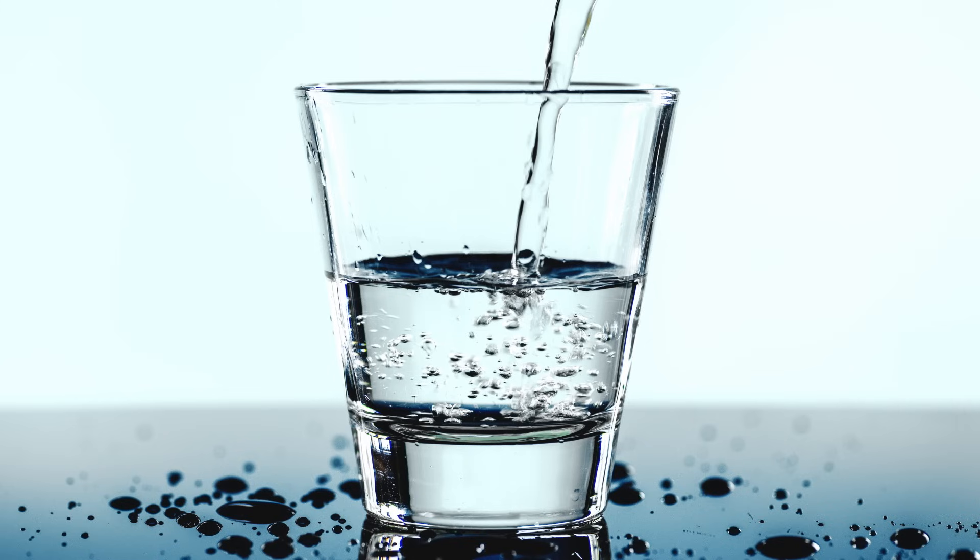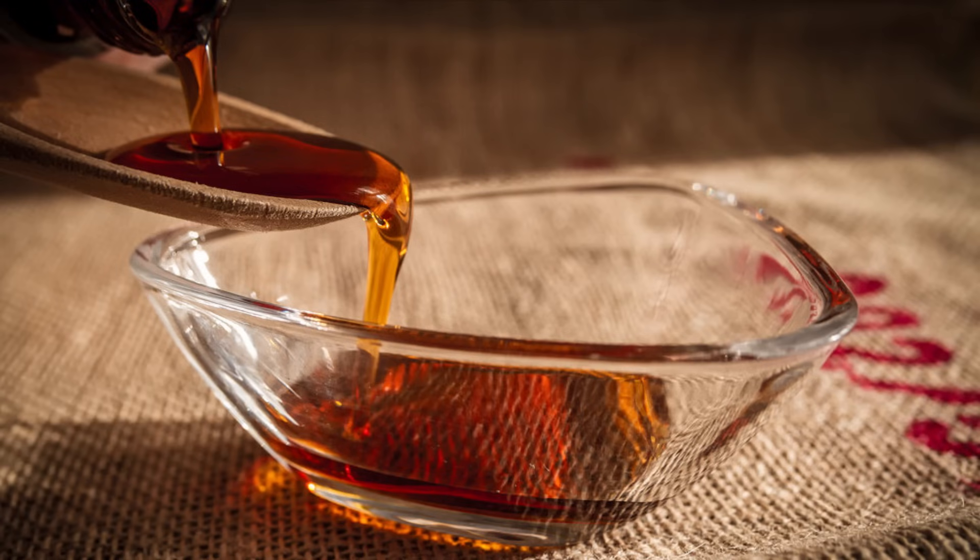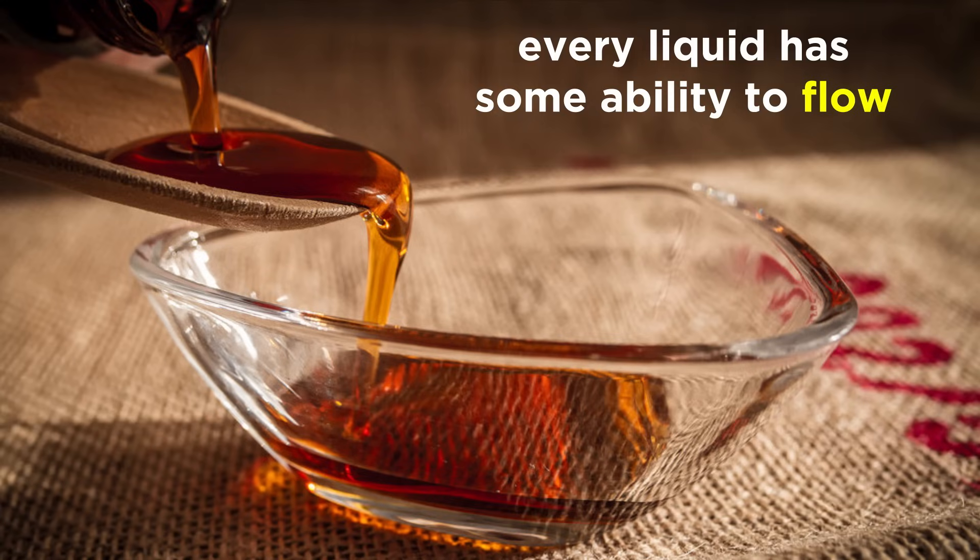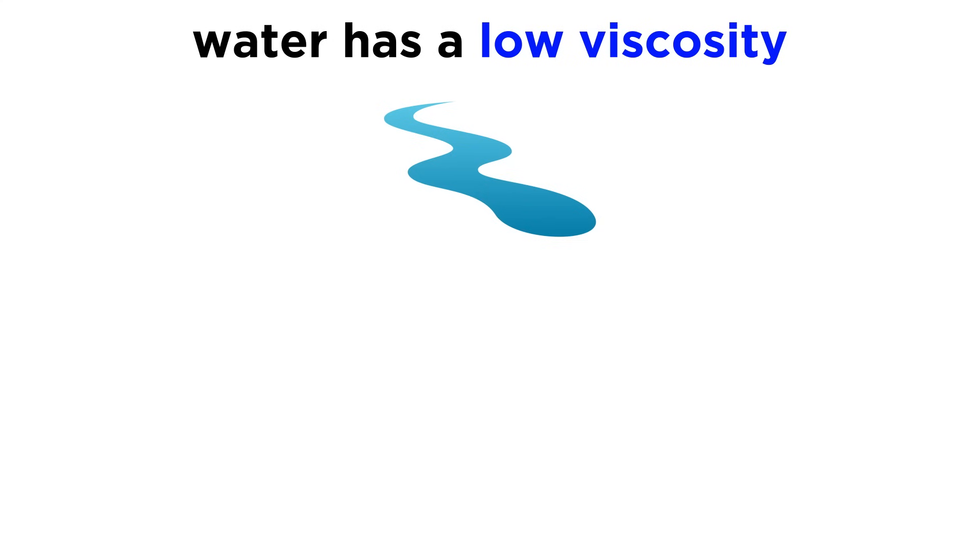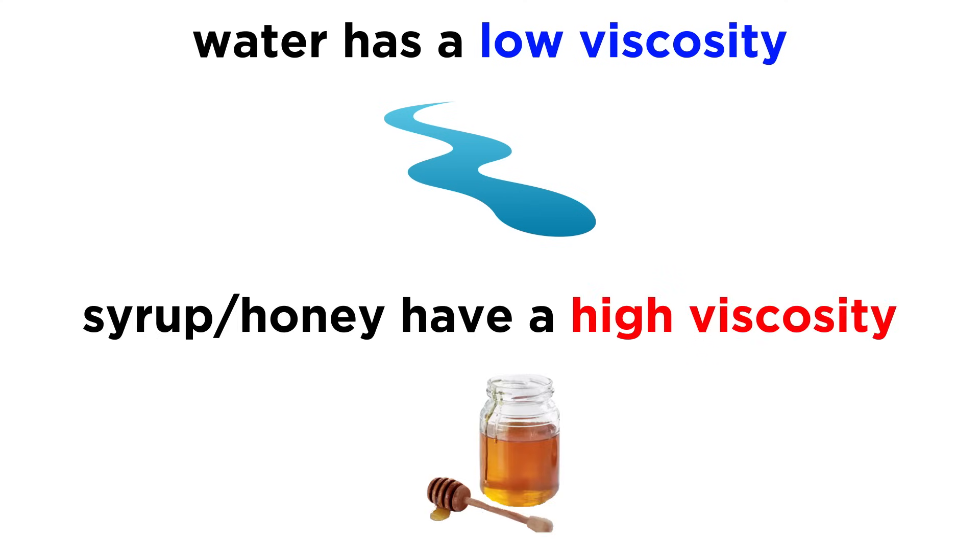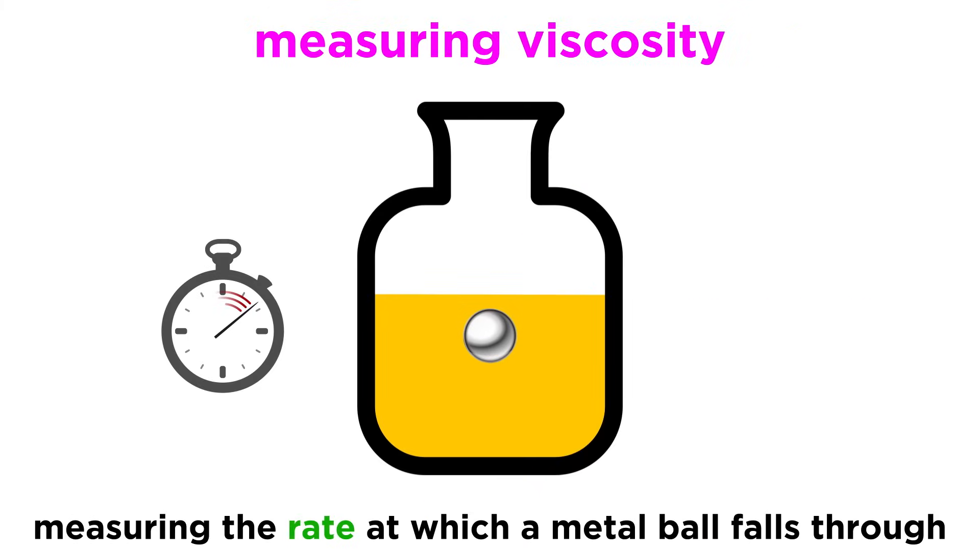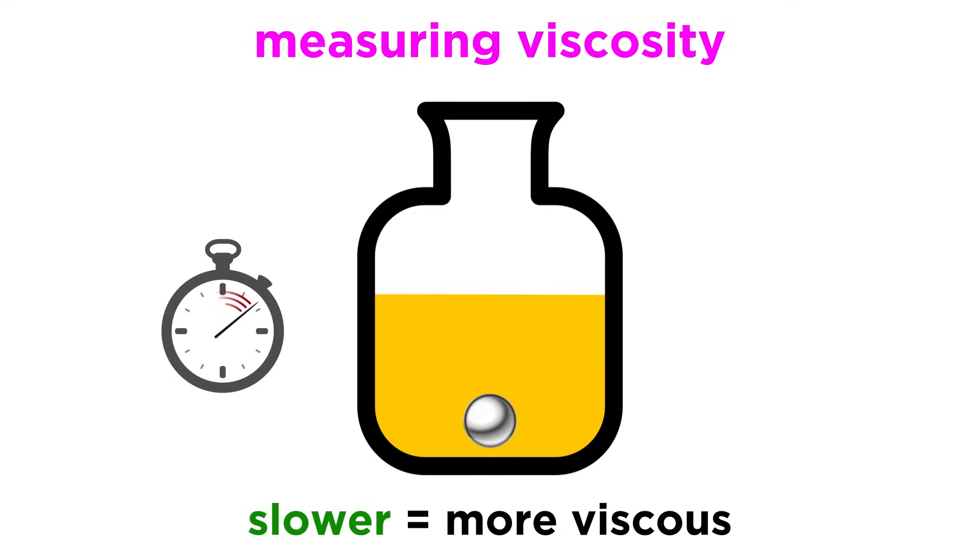First, think about a few different kinds of liquids, and what happens as they move. Think about pouring a glass of water. Now think about pouring maple syrup. There is a distinct difference in the ability of these liquids to flow. The ability of a liquid to resist flow is called viscosity. Water has a low viscosity because it flows freely, while substances like syrup and honey have a high viscosity because they flow very slowly. We can measure viscosity quantitatively by measuring the rate at which a metal ball falls through a substance. The slower it falls, the more viscous the liquid.